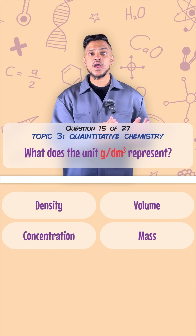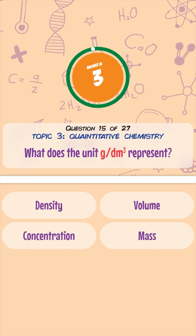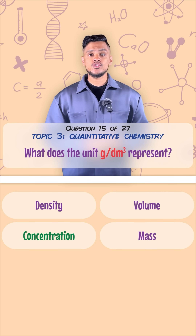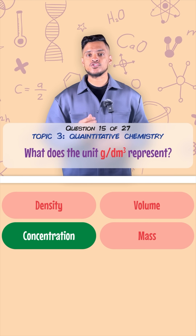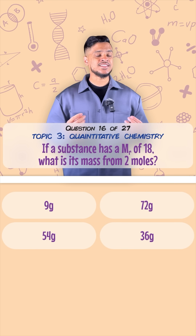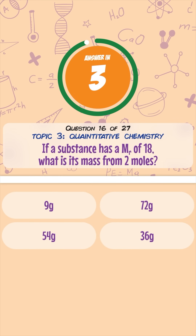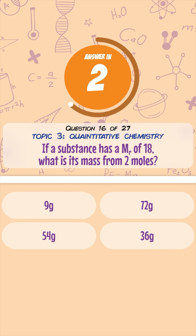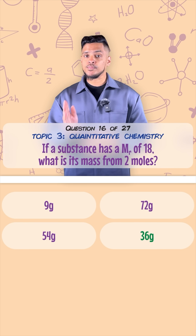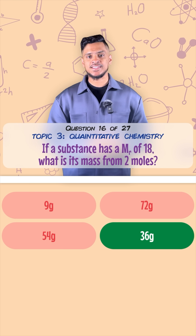What does the unit grams per dm cubed represent? That's a unit for concentration. If a substance has an Mr of 18, what is its mass if there are two moles of it? Mass equals moles times Mr, so 2 times 18 gives you 36.